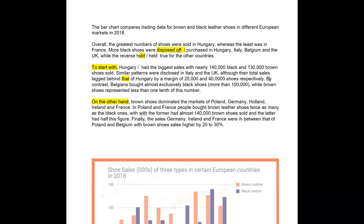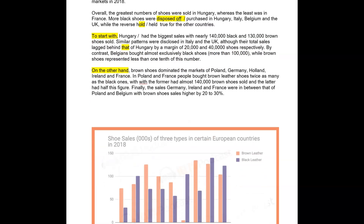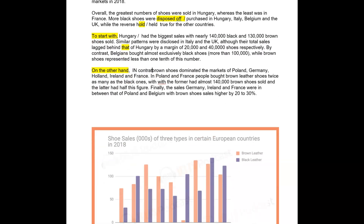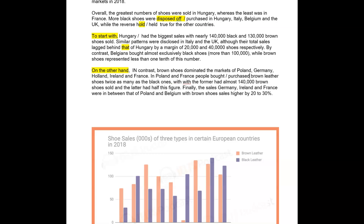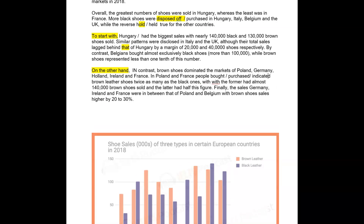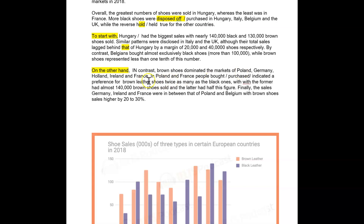By contrast — we would actually say 'in contrast' — Belgium's bottom is exclusively black shoes over brown shoes. Really nice, that is lovely writing. In contrast, brown shoes dominated the markets of Poland, Germany, Holland. In Poland or France, people bought — you could have 'purchased' or 'indicated' — a preference for brown leather shoes.